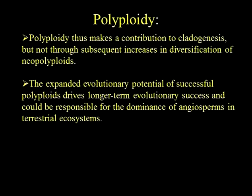If polyploidy is making a contribution to diversification, then it's not through subsequent increases in numbers of species — not in the short term. It only seems to come into effect in the longer term, something that happens much after the formation of that polyploid group. Based on the fact that we know all angiosperms are polyploids, this has eventually been successful. And we think polyploidy may be one of the factors responsible for the dominance of the angiosperms in terrestrial ecosystems. There was a polyploid event right at the base of the angiosperm tree just before the diversification in this five million year period.